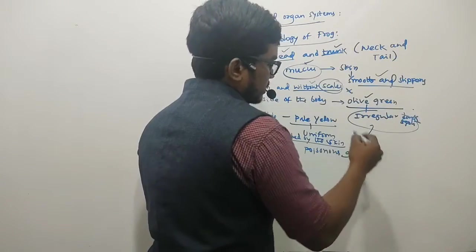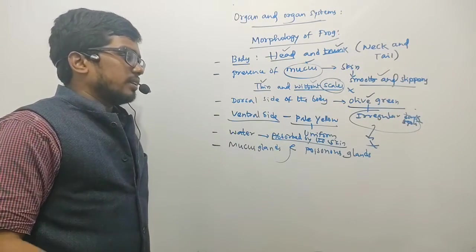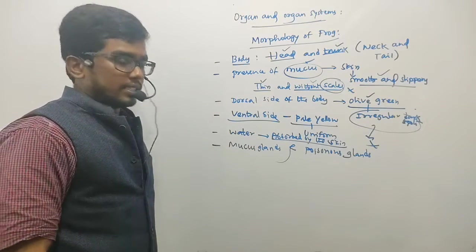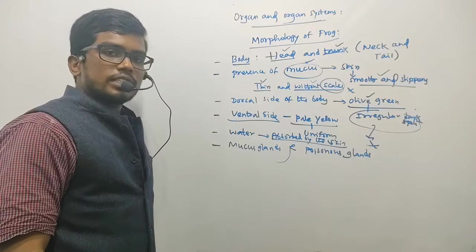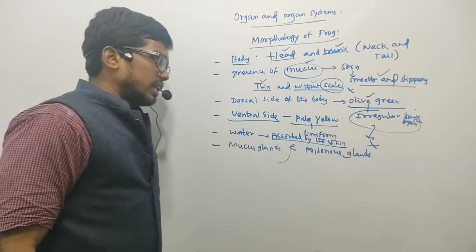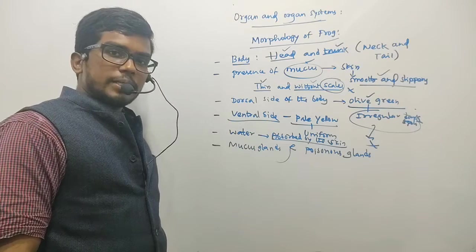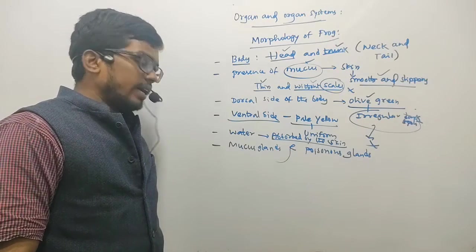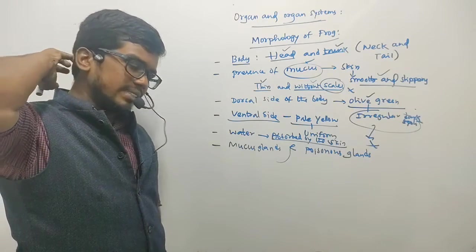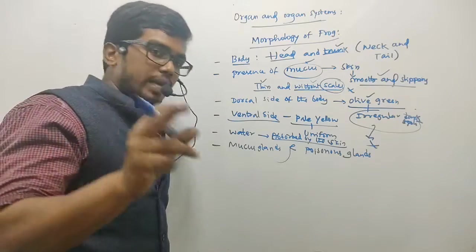Certain toxic substances are released through the poisonous glands. In some regions like the Amazon and other deep forests, we can find certain highly poisonous frogs that contain very high toxic levels in their poisonous glands. Apart from this, just above the mouth they have a pair of nostrils.